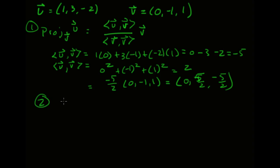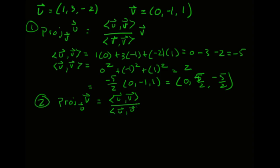Now for problem 2, instead of projecting u onto v we are going to project v onto u. The numerator is still the inner product of u and v — it could be written as v·u, but it's the same thing — and the denominator is now u·u, then multiplied by vector u. We already know u·v is -5.